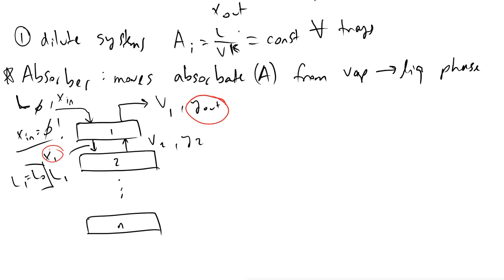So the streams that are exiting a tray must be at equilibrium. And that is to say that Y_out is equal to K, some equilibrium constant, times x_1.